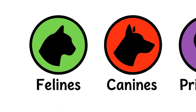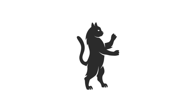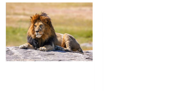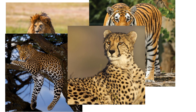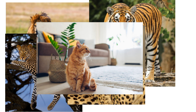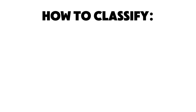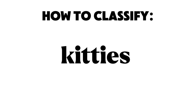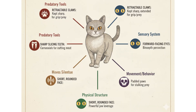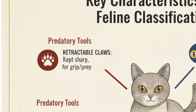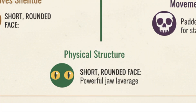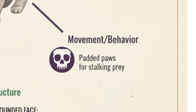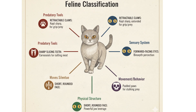Felines — the drama queens of nature. Lions, tigers, leopards, cheetahs, even your house cat who thinks it's royalty. How do you classify a feline? If an animal has retractable claws, sharp slicing teeth, forward-facing hunter eyes, a short rounded face, and moves silently like it's avoiding rent — it's a feline.